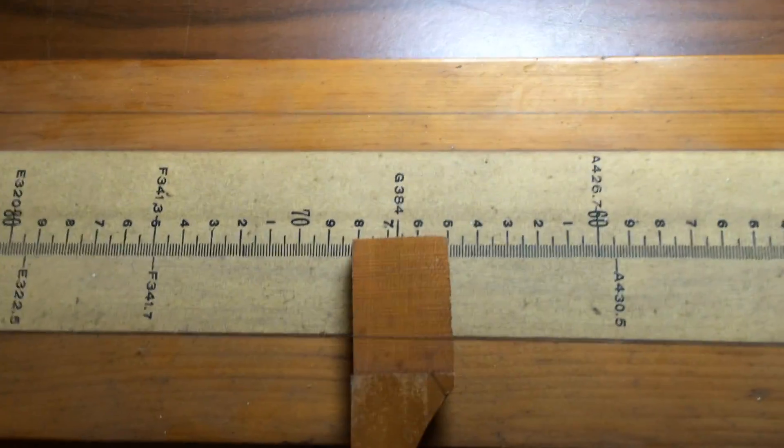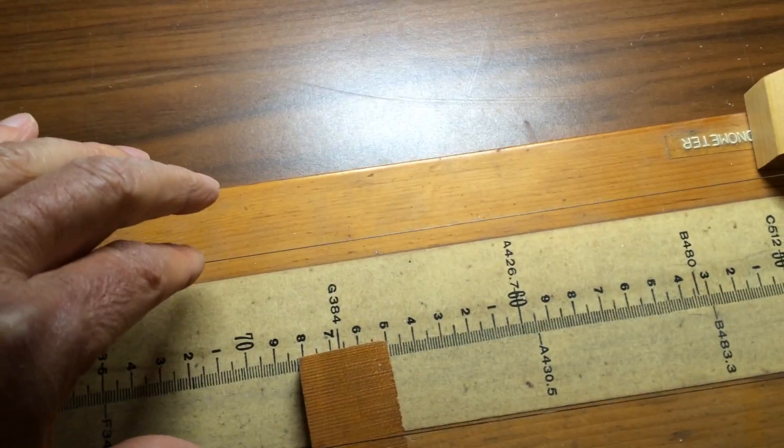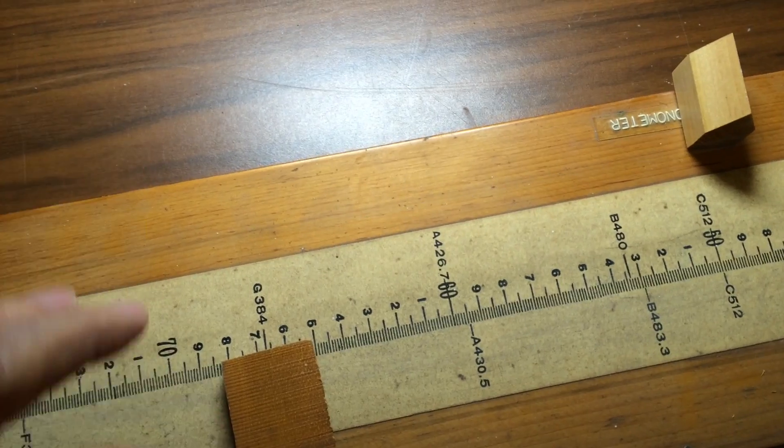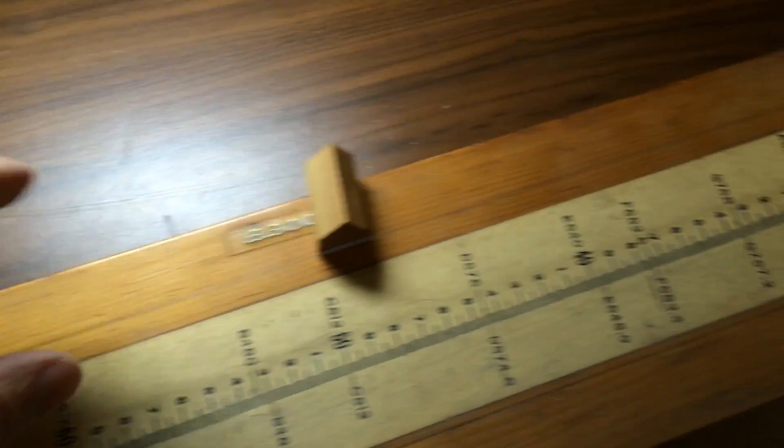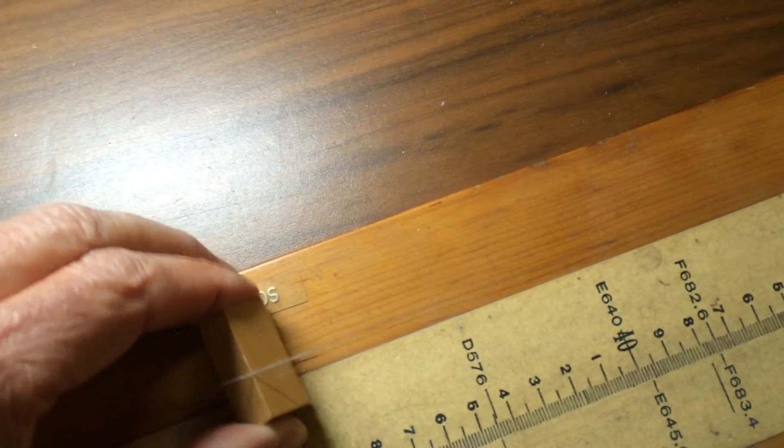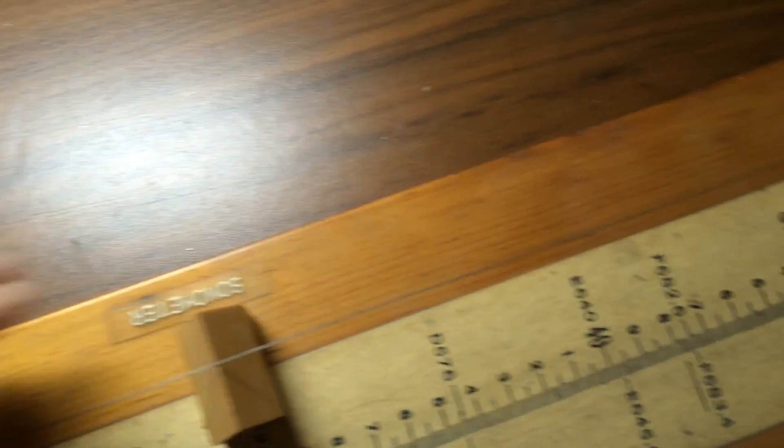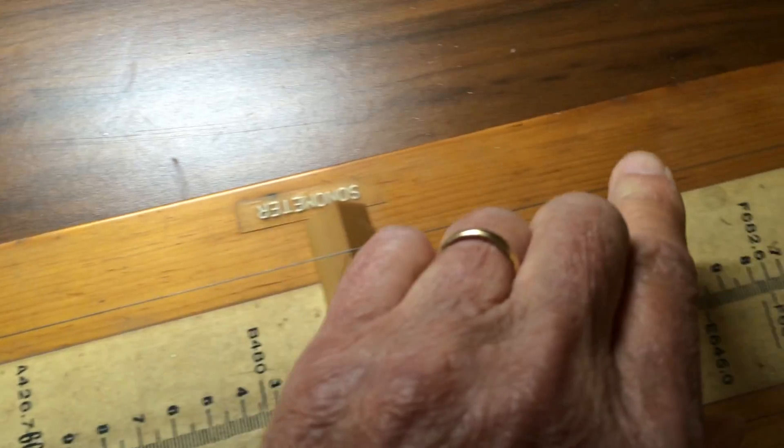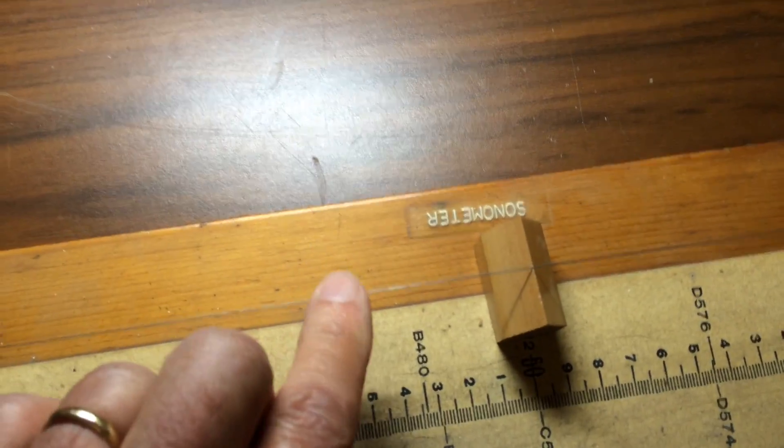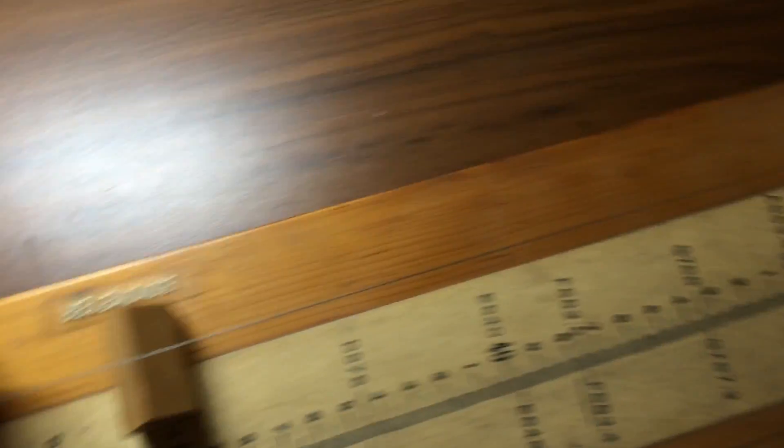Right now, the two strings are the same note. If I put a block at the midpoint, at 50 centimeters, we now have an octave higher. So each side of the string is now an octave higher.